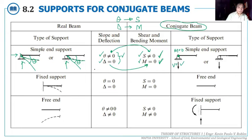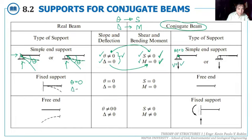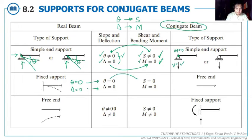Now let's consider a fixed support. The slope at a fixed support is zero, and the deflection is also zero. In the conjugate beam, since slope corresponds to shear and deflection corresponds to moment, both shear and moment would be zero. What type of joint has zero shear and zero moment? That is a free end — at the free end, there is no shear force and no moment.